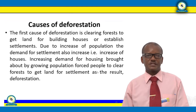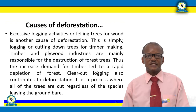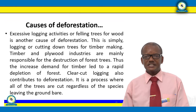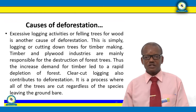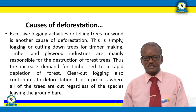The second cause of deforestation is excessive logging — felling trees for wood. Timber and plywood industries are mainly responsible for the destruction of forest trees; increased demand for timber has led to rapid depletion of forest. Clear-cut logging also contributes to deforestation — it is a process where all trees are cut regardless of species, leaving the ground bare, with no selection practiced.